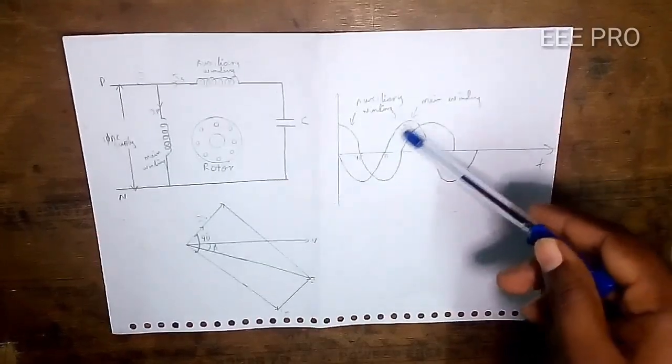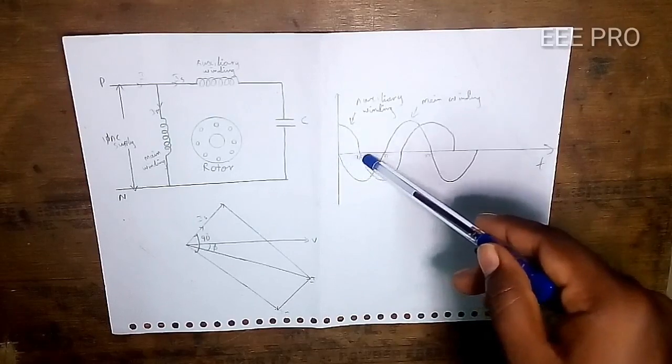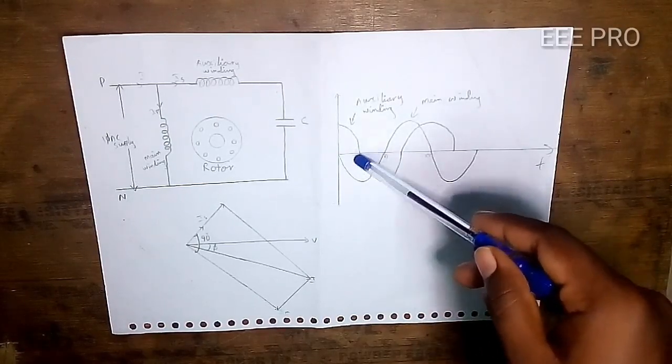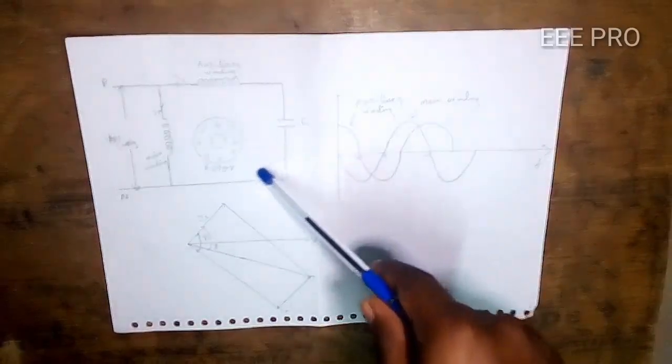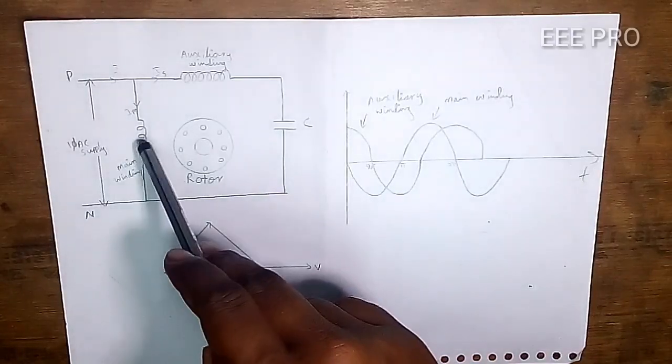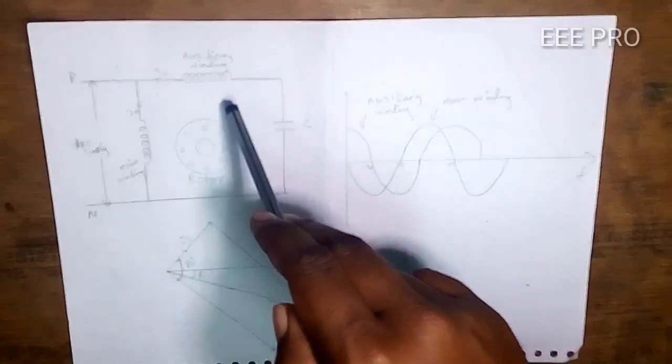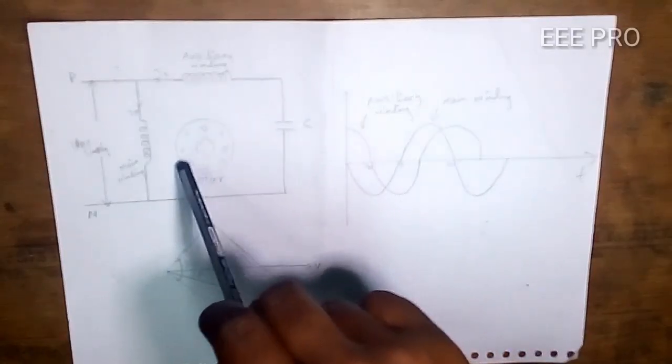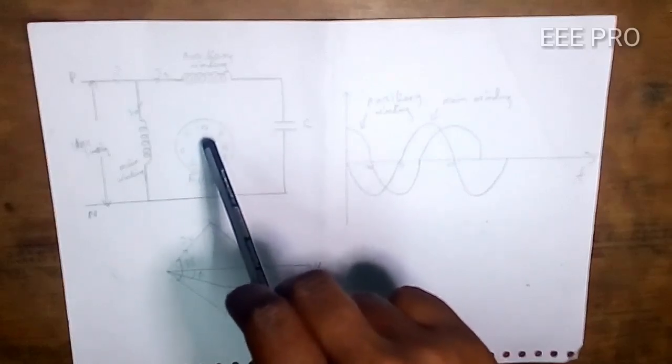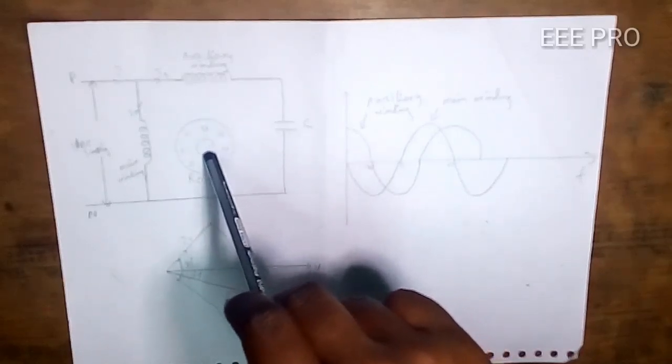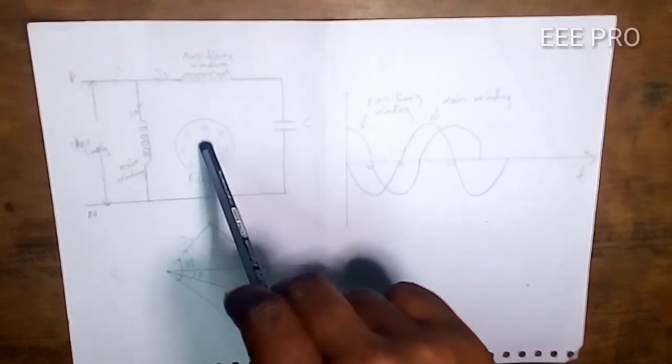When running, the main winding and auxiliary winding have a 90 degree phase shift. This produces a rotating magnetic flux in the stator, which cuts the rotor and induces EMF.